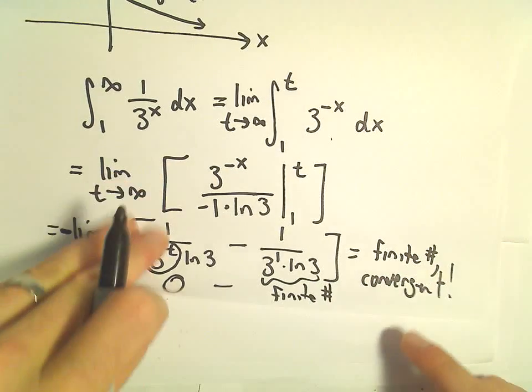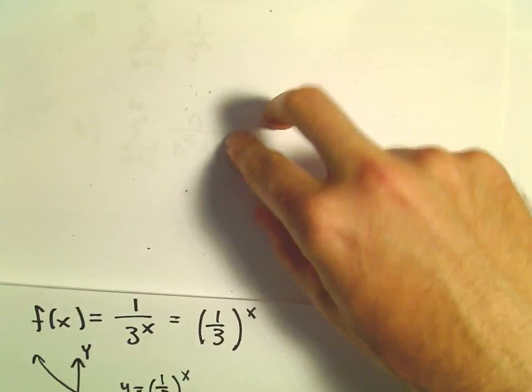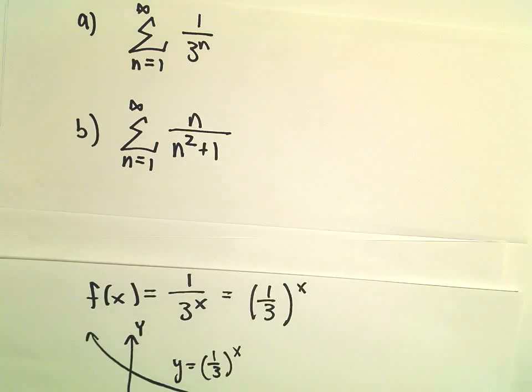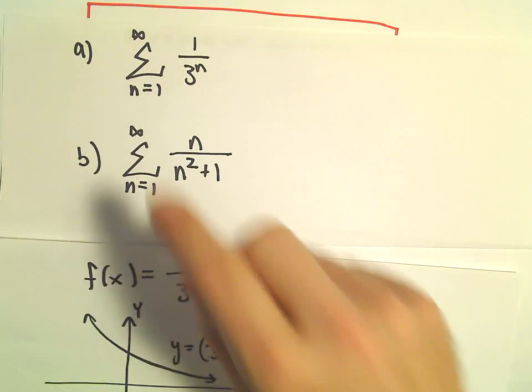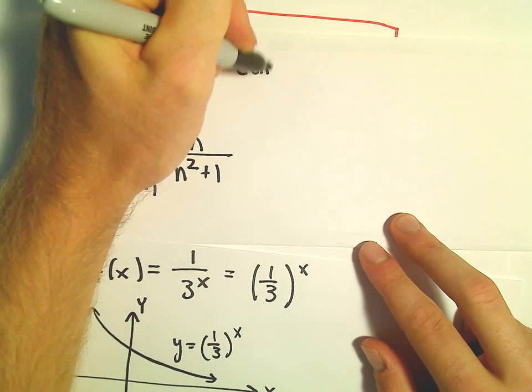And so also, since the improper integral is convergent, we can also immediately conclude that the series from 1 to infinity of 1 over 3 to the n is also convergent.